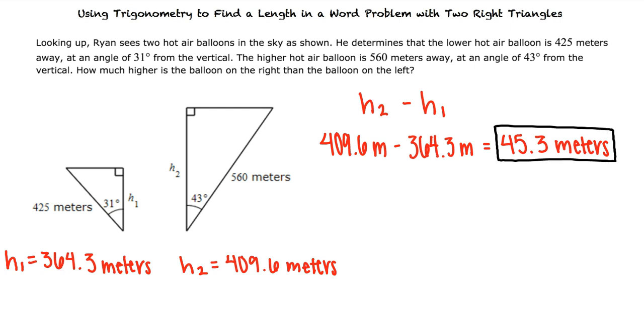Okay, so in a word problem with two right triangles, we will need to split the triangles apart and determine which trig equation we can use to find the missing sides. Using these lengths, we will be able to determine the final solution. That's exactly right. Great work!